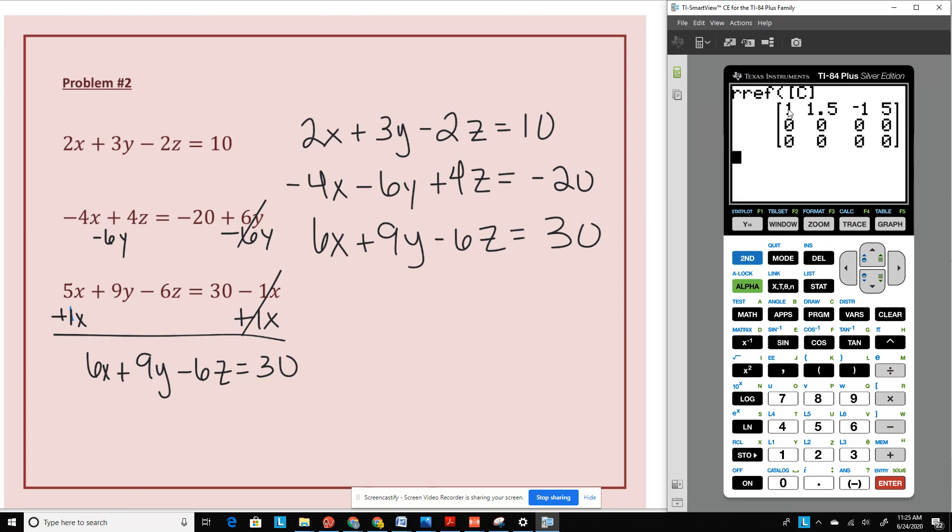Now notice here, you do not see three ones diagonally. That means that this does not have a unique solution. Now, I always look at this bottom row. I have straight zeros here. And I say 0z, does it equal 0? If the answer is true, if 0 equals 0, then that means that this graph is consistent and dependent.